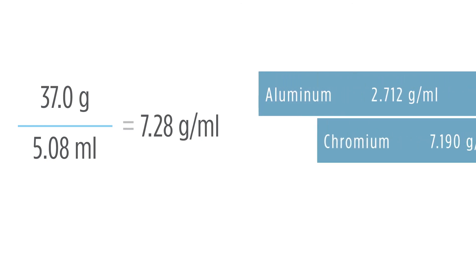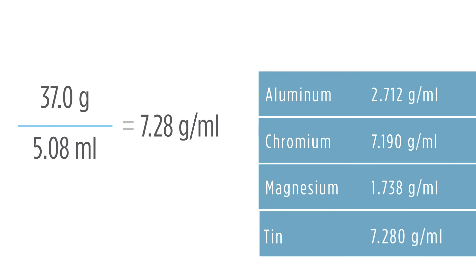Now what we need to do is take this density and compare it to our chart. When we do that comparison, we see that 7.28 grams per milliliter is equal to the density of tin, 7.280. So therefore, the correct answer for this problem is tin.